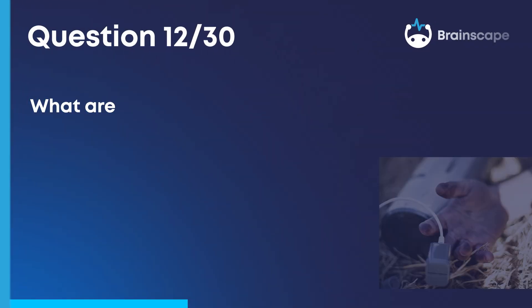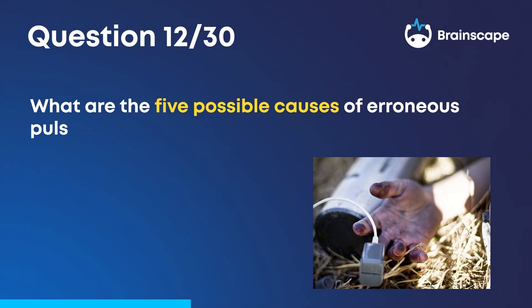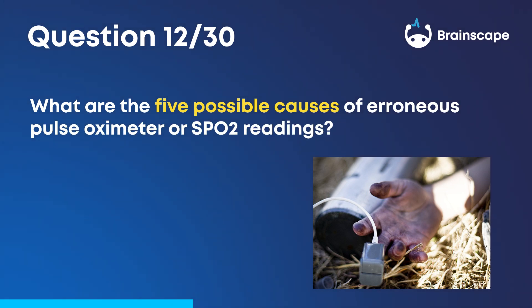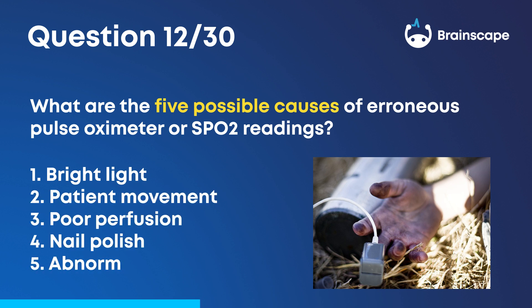Question 12. What are the five possible causes of erroneous pulse oximeter, or SpO2 readings? Bright light, patient movement, poor perfusion, nail polish, and abnormal hemoglobin.